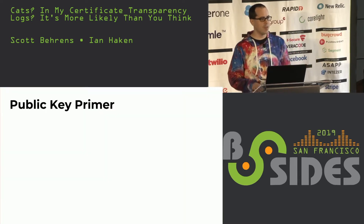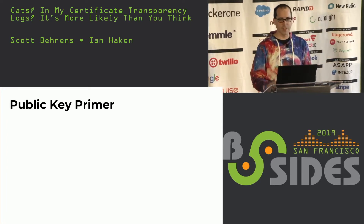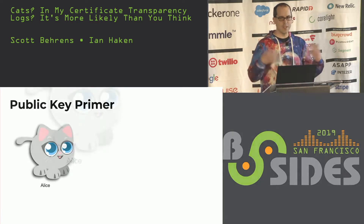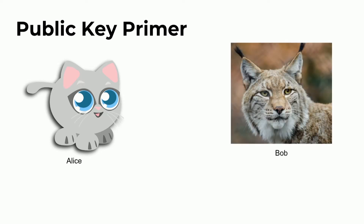To understand what certificate transparency is and why we need it, let's start by making sure we all understand the basics of public key cryptography. Let's illustrate how public key crypto works with our classic example of Alice and Bob. Here's Alice — she's a friendly cat, she makes lots of friends. One day she runs into Bob. They're kind of different: Alice is more of a home buddy, Bob is more of an outdoorsy type.